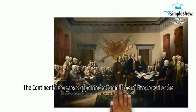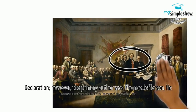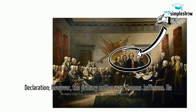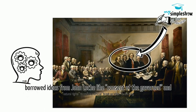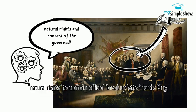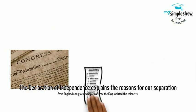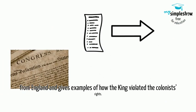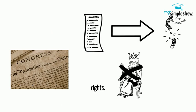The Continental Congress appointed a committee of five to write the Declaration. However, the primary author was Thomas Jefferson. He borrowed ideas from John Locke, like Consent of the Governed and Natural Rights, to craft the official break-up letter to the king. The Declaration of Independence explains the reasons for separation from England and gives examples of how the king violated the colonists' rights.